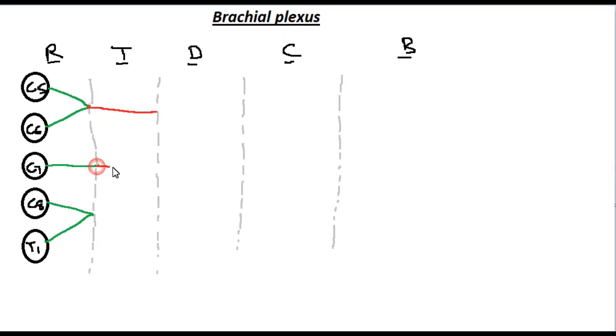Upper two roots join to form the upper trunk, middle trunk, and lower two will join to form the lower trunk.